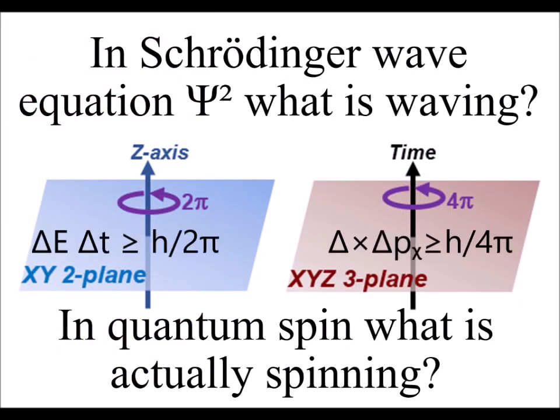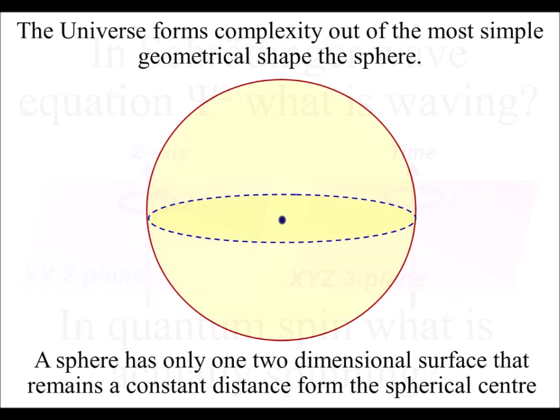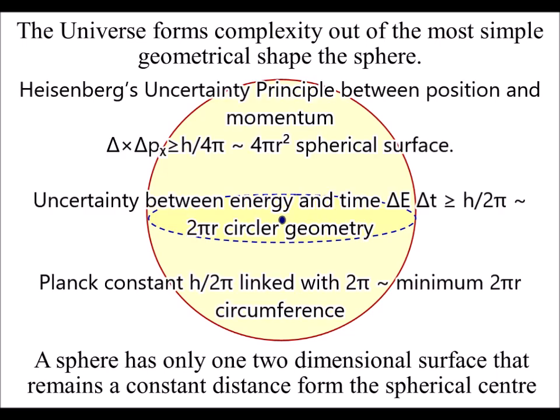This is like asking the question, what is waving in the wave equation? I believe we can have an objective, intuitive understanding of quantum mechanics if we explain it as a geometrical process based on 4pi and 2pi.